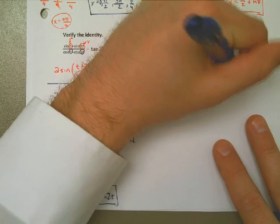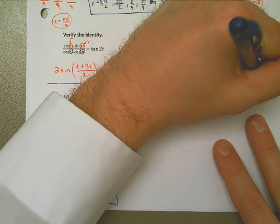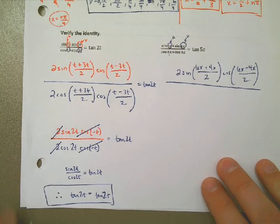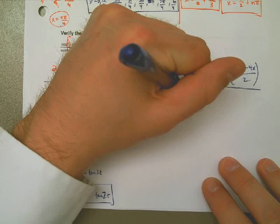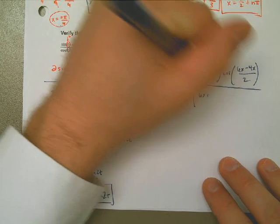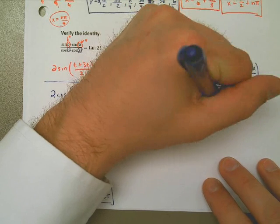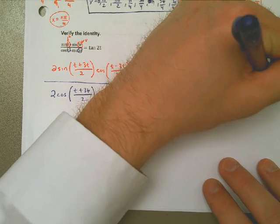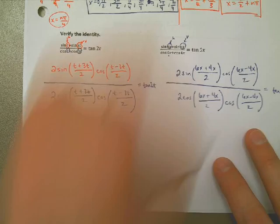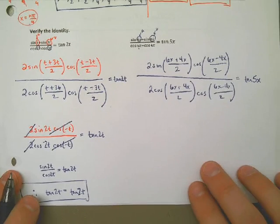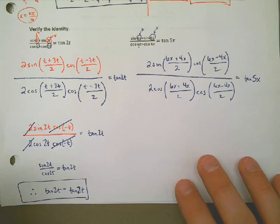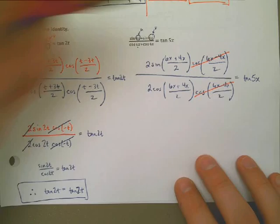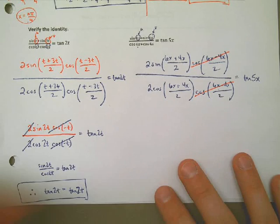There's the first one. On the bottom, I have cosine plus cosine, which can be rewritten using the sum to product formulas as 2 cosine 6x plus 4x all over 2 times the cosine of 6x minus 4x all over 2. That is equal to the tangent of 5x. Same thing. Now before I even go any farther, you see this, and you see this, those are going to go away. So I don't even need to simplify. Let's not even worry about it. The 2s are going to go away. So I'm going to go ahead and simplify those now.